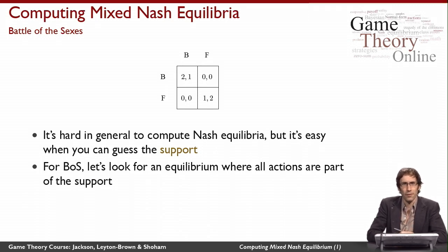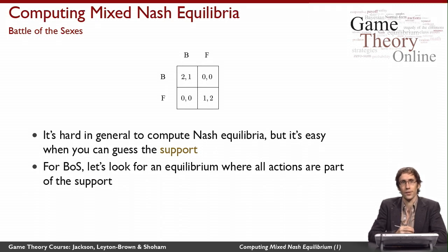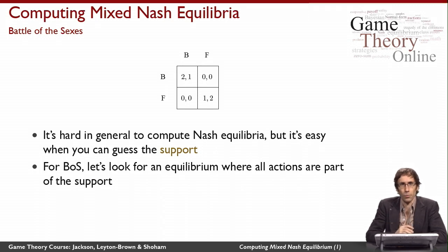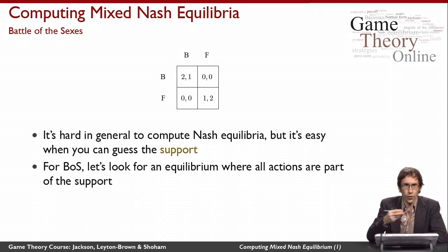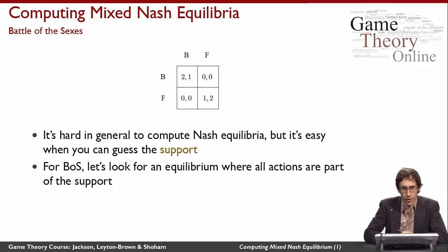Nash's theorem is a funny theorem because it tells us that something exists, but it doesn't tell us how to find it. It just tells us that it has to be there — it's a non-constructive argument. So what I'm going to tell you today is sort of a starting point to finding an equilibrium, which is enough that it works in small games. You can turn this into a general algorithm, but not necessarily the most efficient or insightful way of finding equilibria.